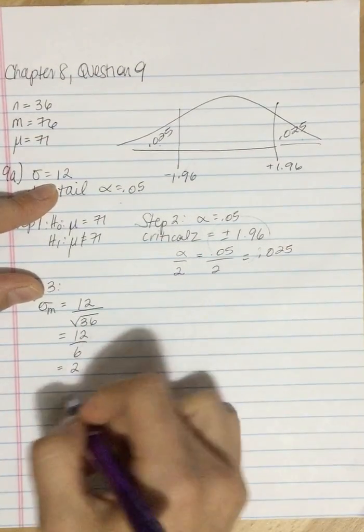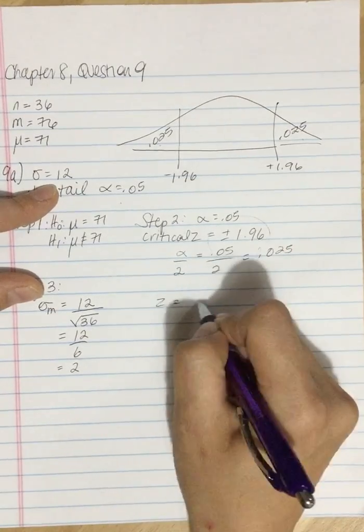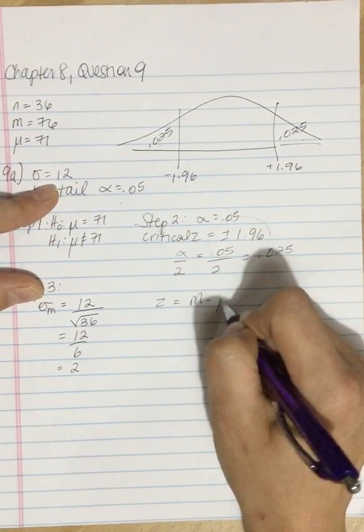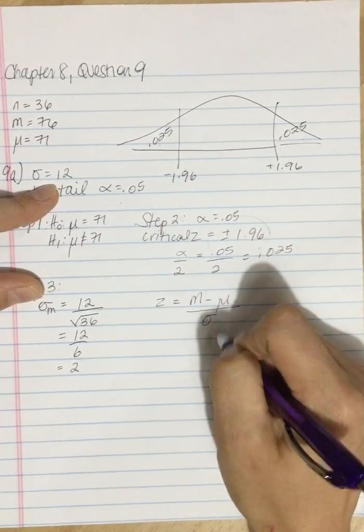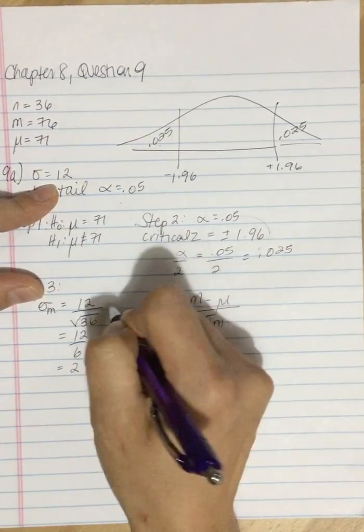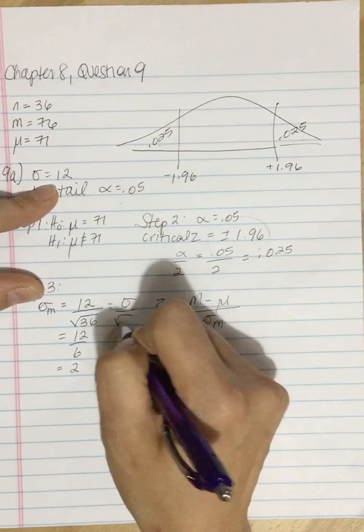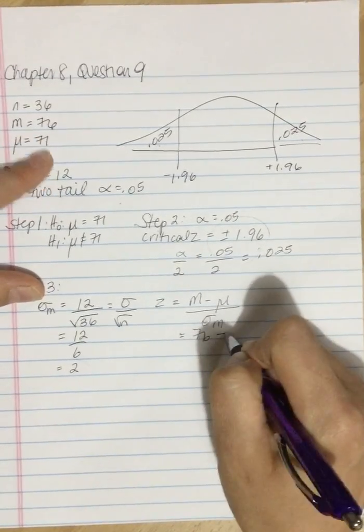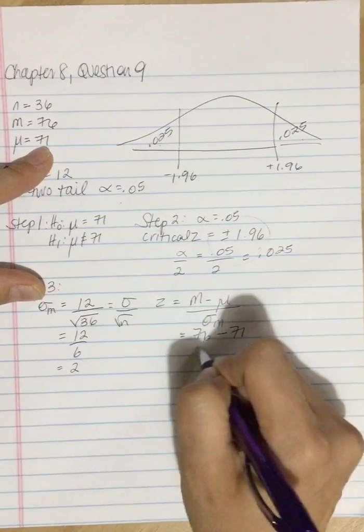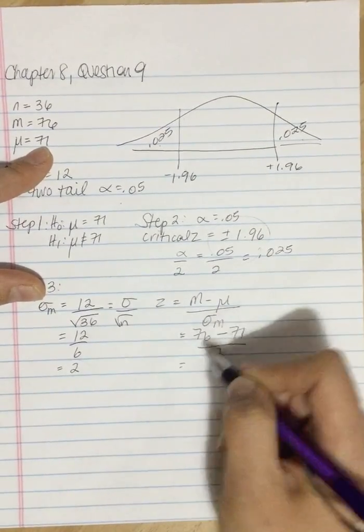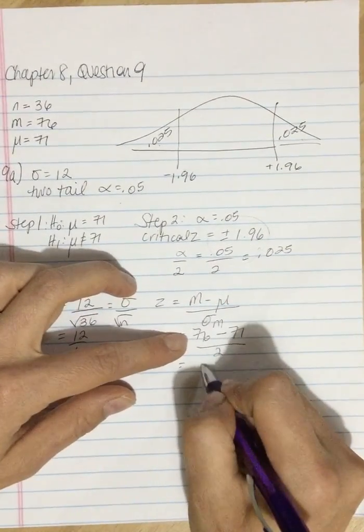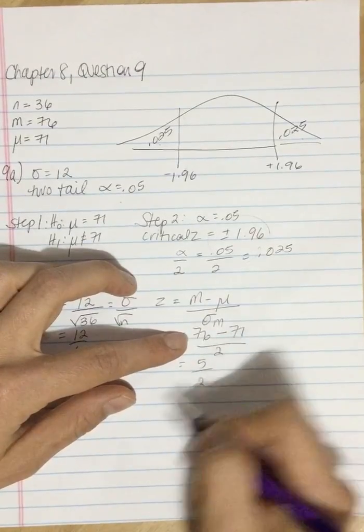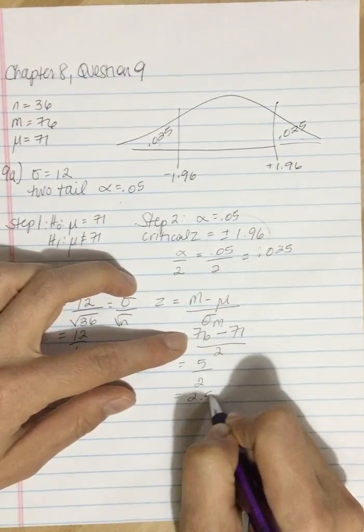I'm going to take this and then I plug it into my z-score formula where I take the mean minus the population value divided by the standard error. And so the mean was 76, subtract the population value of 71 and divide by 2.